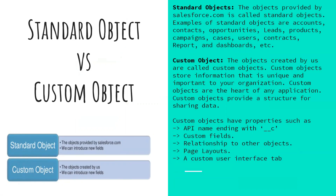Let's discuss standard objects and custom objects in Salesforce. Objects are database tables that allow us to store data specific to the organization. In Salesforce there are two types of objects: standard objects and custom objects. Standard objects are provided by Salesforce.com. Examples include Account, Contact, Opportunity, Leads, Product, Campaign, Cases, User, Contract, Report, and Dashboard.